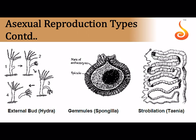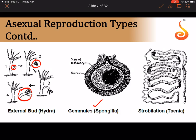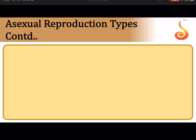In hydra, a protrusion develops on the body, the projection starts growing, gets detached from the parent body, and starts leading an independent life. Gemmule is an example of internal buds seen in freshwater sponges, mostly meant to tide over unfavorable environmental conditions. Strobilation also happens in tapeworm.